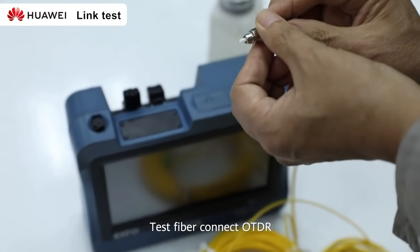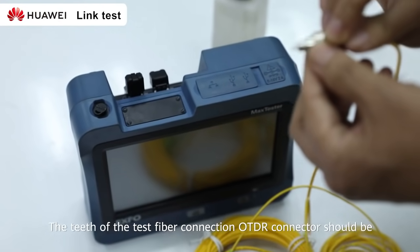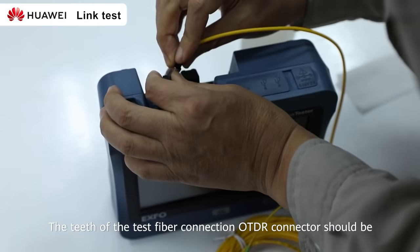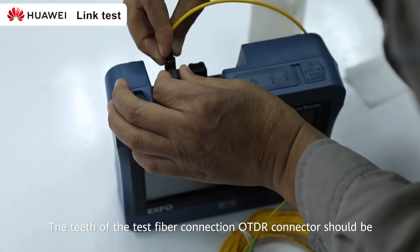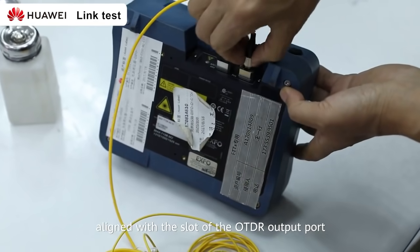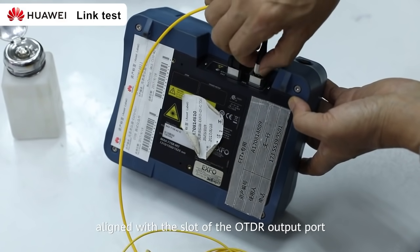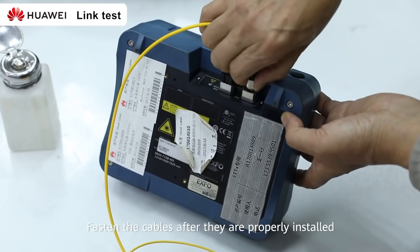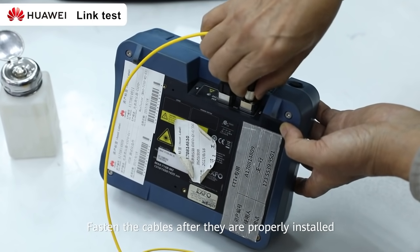Test fiber connect OTDR. The teeth of the test fiber connector should be aligned with the slot of the OTDR output port. Fasten the cables after they are properly installed.